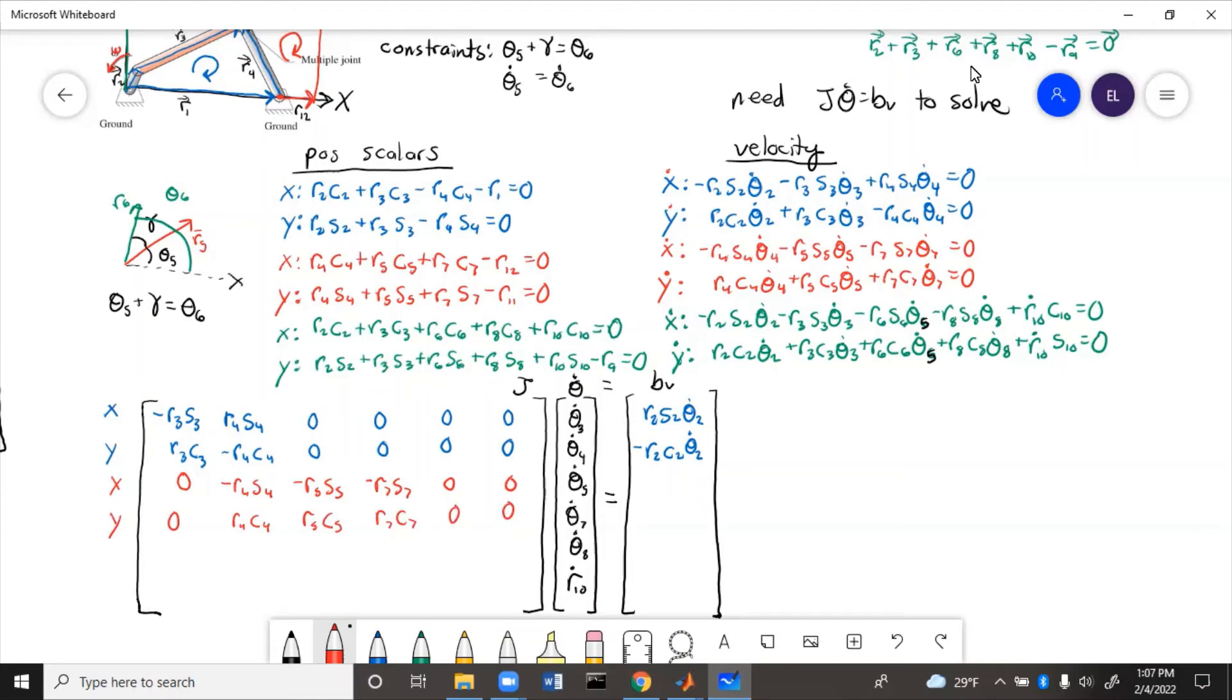And that was all of the variables in the equation. There was no theta 2. So there will be nothing on the B side. And that's okay. B can have zeros in it. As long as it's not completely zeros, then you're okay.